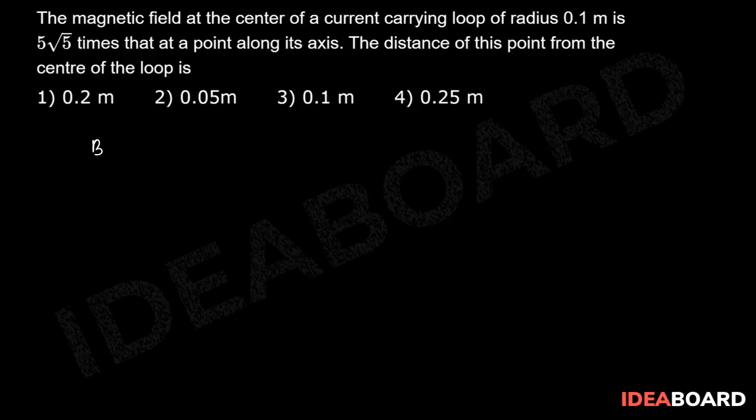We know that the magnetic field at the center divided by the magnetic field at the axis of a coil is equal to mu naught n i divided by 2r. This is the magnetic field at the center divided by the magnetic field at axis.